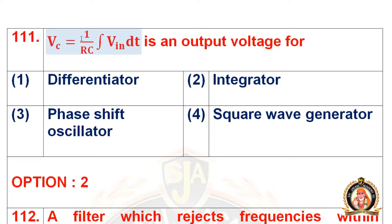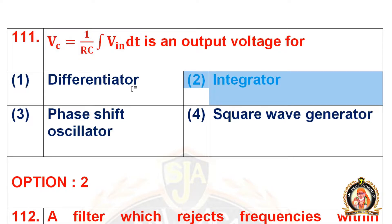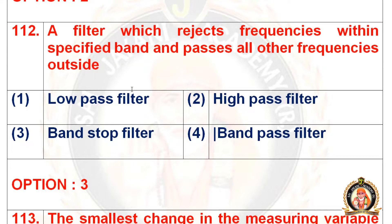Question 111: Vc = (1/RC) ∫Vin dt is the output voltage for dash. The options are differentiator, integrator, phase shift oscillator, and square wave generator. The right option for question 111 is the second option, that is the integrator.